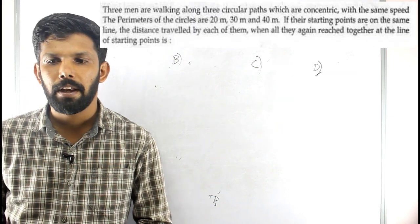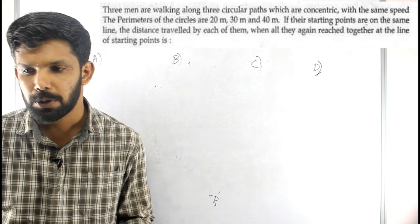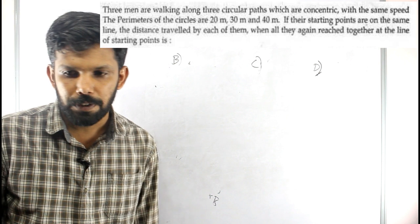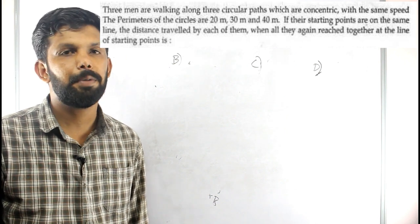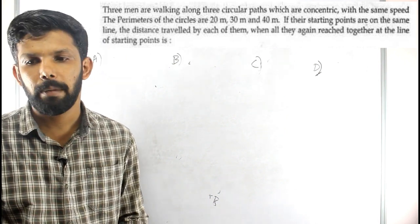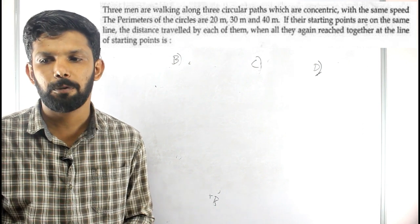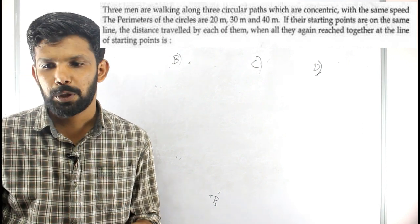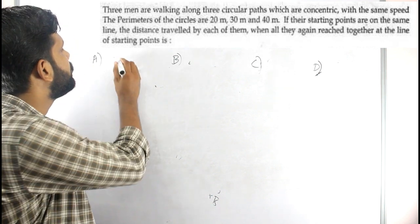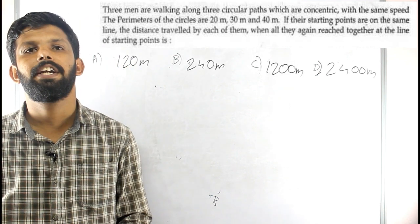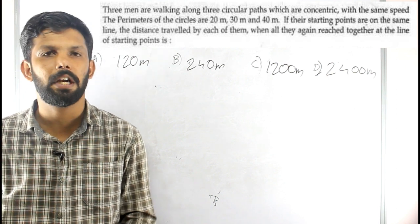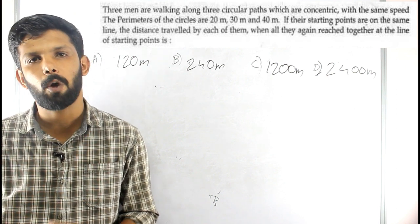Three men are walking along three concentric circular paths at the same speed. The perimeters of the circles are 20 meters, 30 meters, and 40 meters. Their starting points are on the same line. Find the distance travelled by each of them when they all meet again at the starting line. The solution involves LCM, and the question is lengthy but the answer is easy.